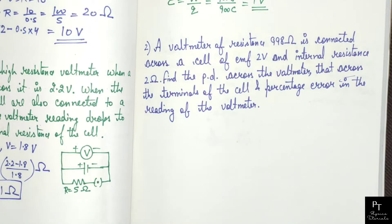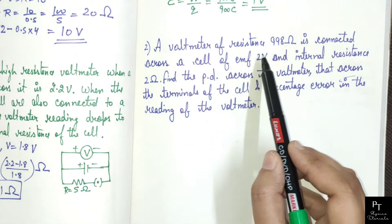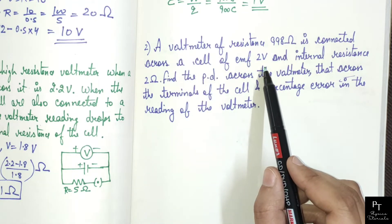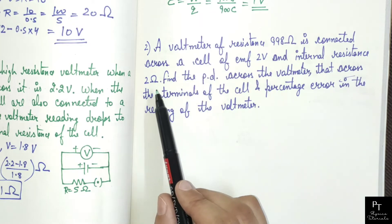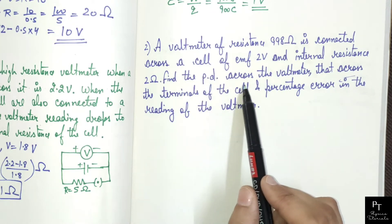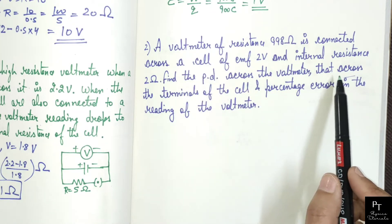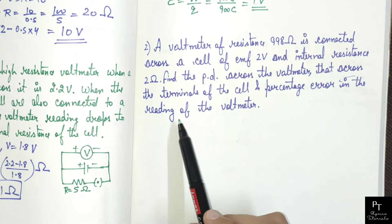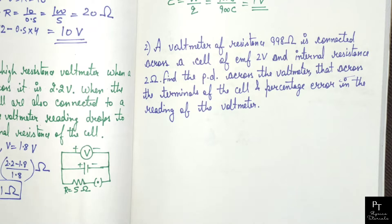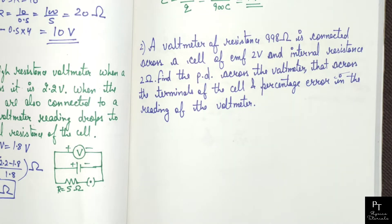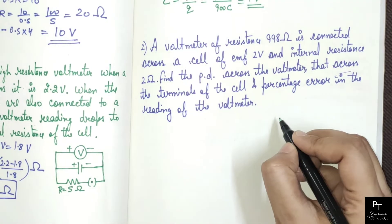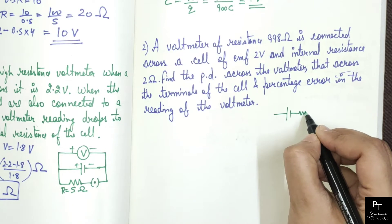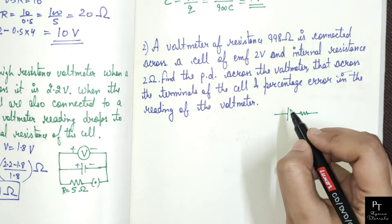Moving to the next question. A voltmeter of resistance 998 ohm is connected across a cell of EMF 2 volt and internal resistance 2 ohm. Find the potential difference across the voltmeter, across the terminals of the cell, and percentage error in the readings of the voltmeter. Let us draw the circuit diagram first. We have a cell of EMF 2 volts and internal resistance 2 ohm.